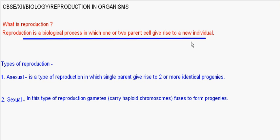Types of Reproduction. Reproduction is mainly classified into two types: Sexual and Asexual Reproduction. Asexual Reproduction is a much simpler process than Sexual Reproduction.